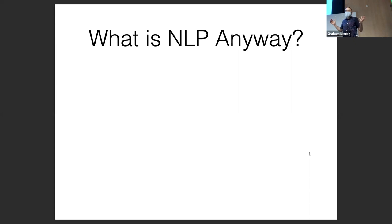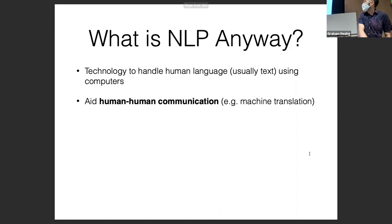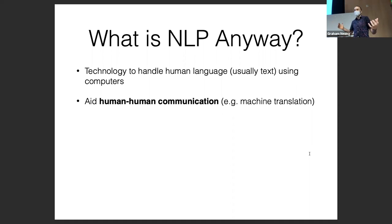This is an obligatory slide. The basic idea is NLP is technology to handle human language, and usually we're referring to text using computers. This is very vague, but it allows us to do a lot of different things. One of the things it can allow us to do is aid human-human communication — machine translation is a stereotypical example, where one person speaks one language, one person speaks another, and we translate between them. There are also dialogue assistants, automatic meeting moderators, and any number of things like that.